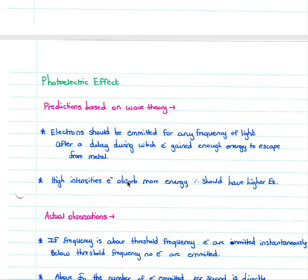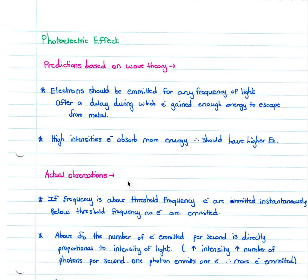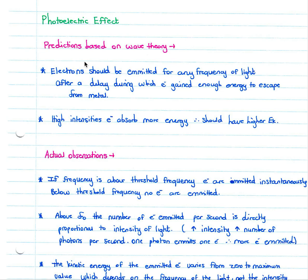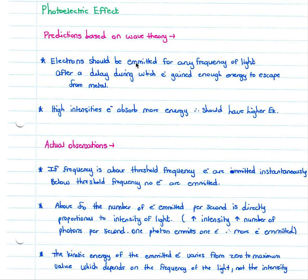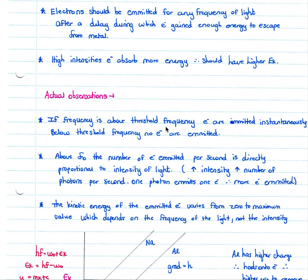When they made predictions based on wave theory, they predicted that electrons should be emitted for any frequency of light after a delay during which electrons gained enough energy to escape from the metal. They also predicted that high intensities meant electrons absorbed more energy and should have higher kinetic energy. Both of these predictions were wrong. The actual observations are: if the frequency is above the threshold frequency, electrons are emitted instantaneously; below the threshold frequency, no electrons are emitted.